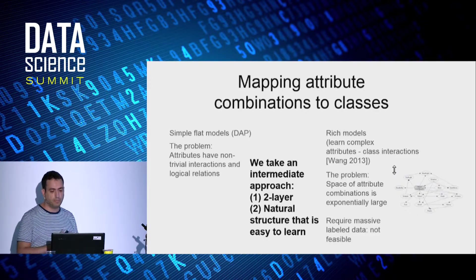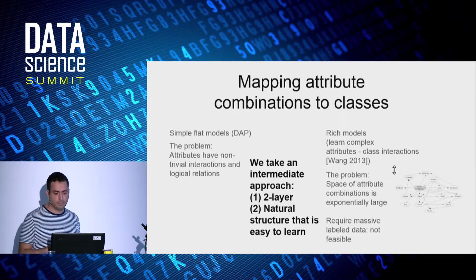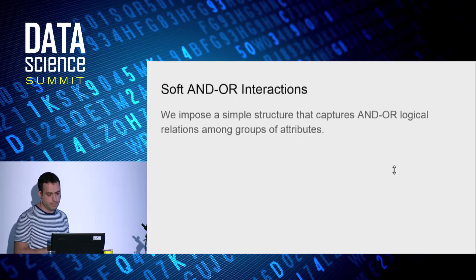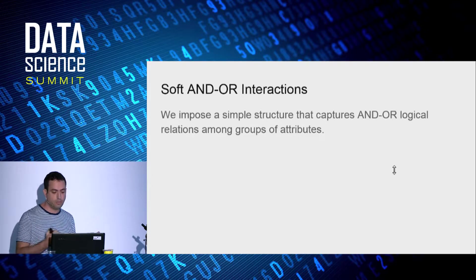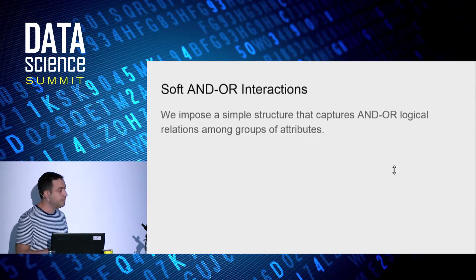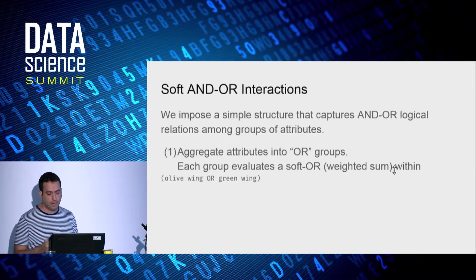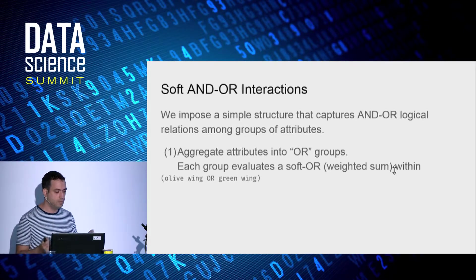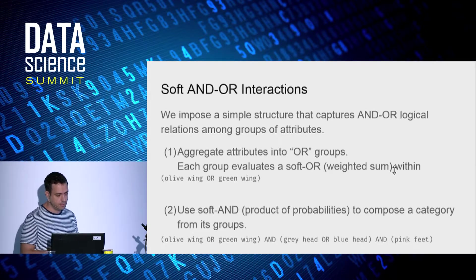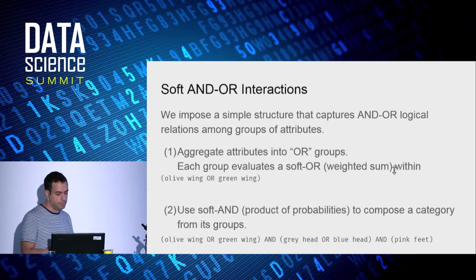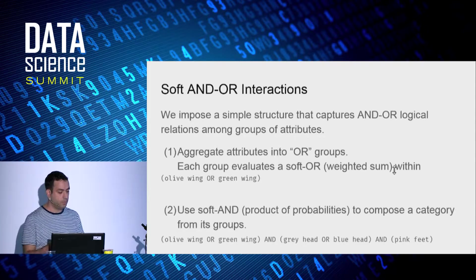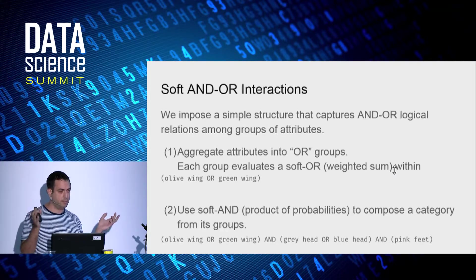We take an intermediate approach. We impose a simple two-layer structure that is natural for this type of data, and it's also easy to learn. And let me first explain what is the key idea, and then I will explain why it is natural for this type of data. So we suggest an approach that imposes a structure that captures AND-OR logical relations among groups of attributes. And our approach has two stages. In the first stage, we aggregate attributes into OR groups. Each group evaluates a soft OR, which is a weighted sum, within its groups. So for instance, olive wing or green wing. In the second stage, we use the soft AND as a product of probabilities to compose a category from its groups. So for example, a category would correspond to olive wing or green wing, and gray head or blue head, each one of these parentheses is a group, and pink feet.